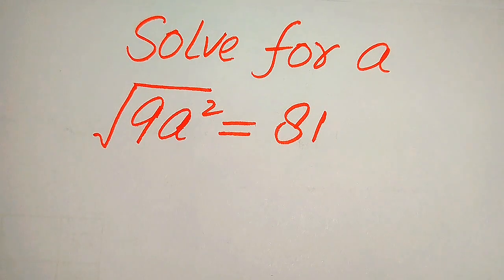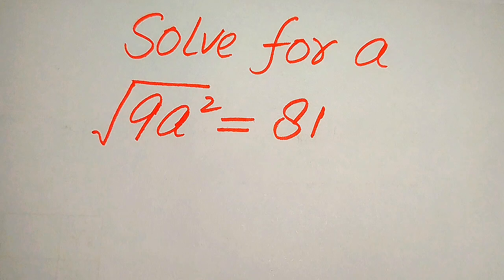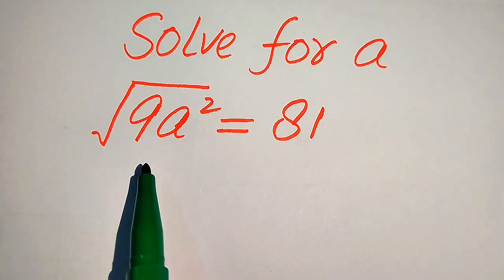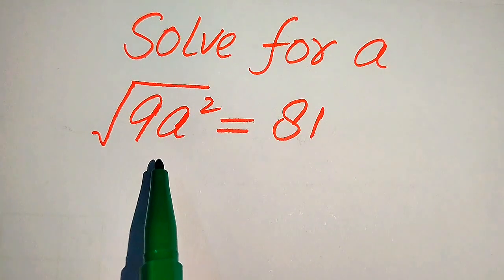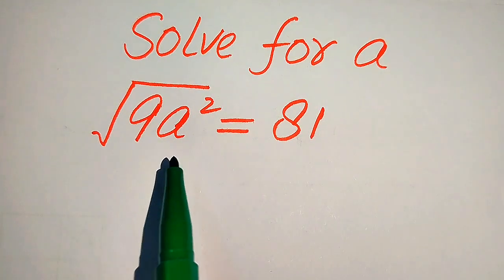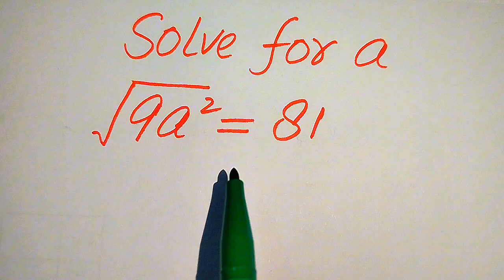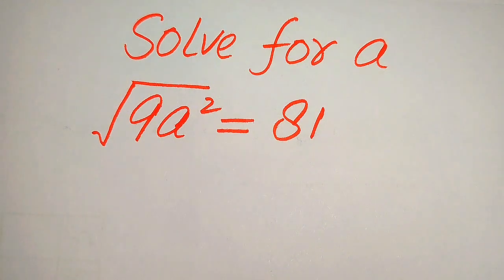Hello everyone. How to solve this problem for the values of a, if we have square root of 9 times a squared equals to 81, and we solve this problem for the values of a.